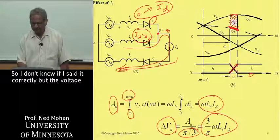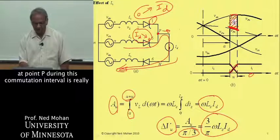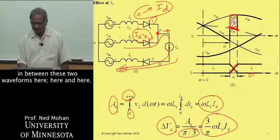The voltage at point P during this commutation interval is really in between these two waveforms over here.